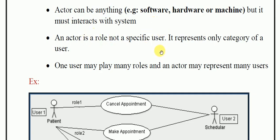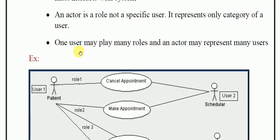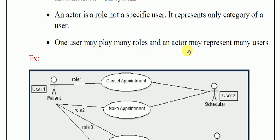Different types of users can be actors as per the requirement of the system. One user may play many roles — the actor is playing a role. Sometimes he can be a doctor, a visitor, or sometimes an admin. Many users can play a role, and an actor may represent many users.